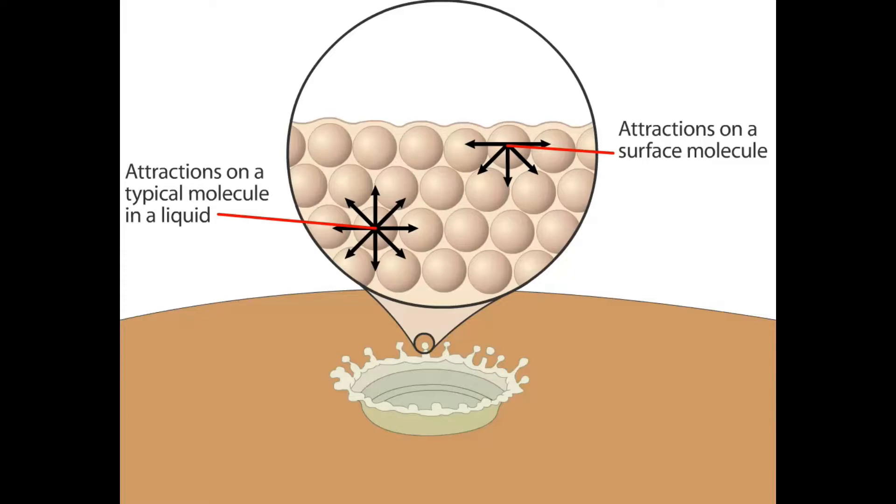Cohesion is the force that causes liquid molecules to be attracted to themselves. This causes splashes to form droplets.